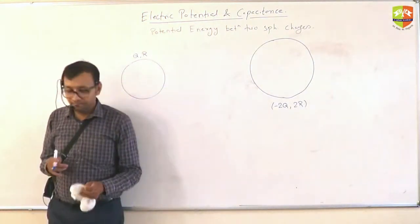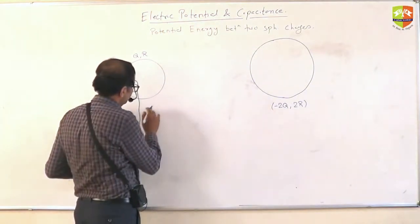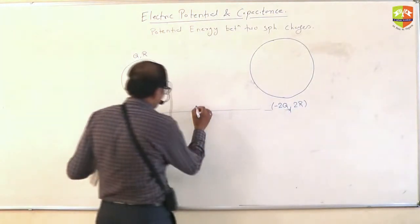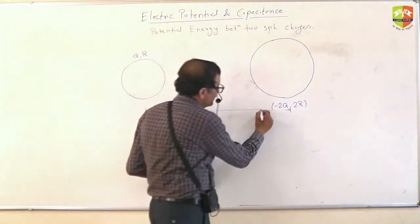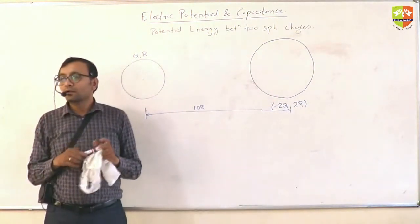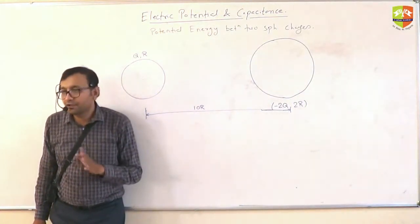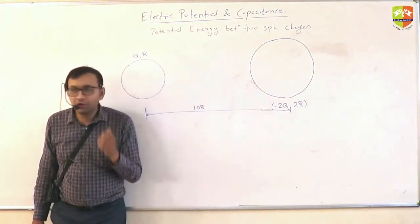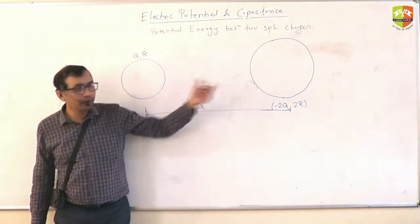These are the two charges. These two charges are right now at a distance of 10R from each other, center to center distance. Both of the spheres are at rest right now, and then you release them. What will happen? They come towards each other — there is attraction, negative and positive charge.